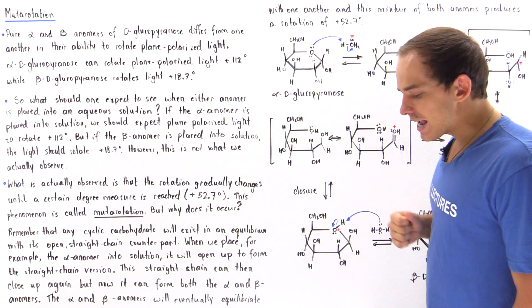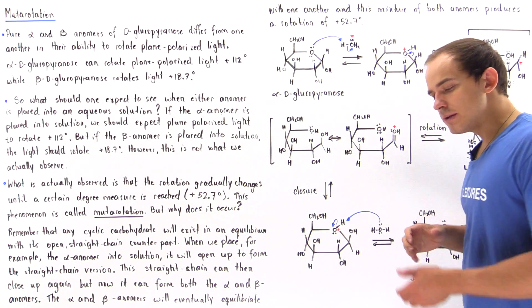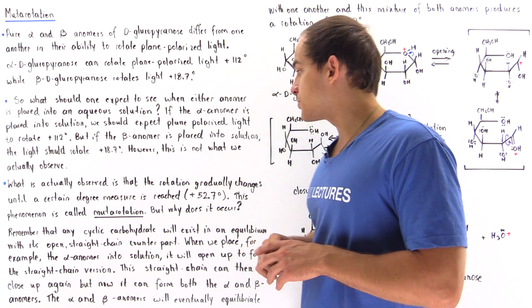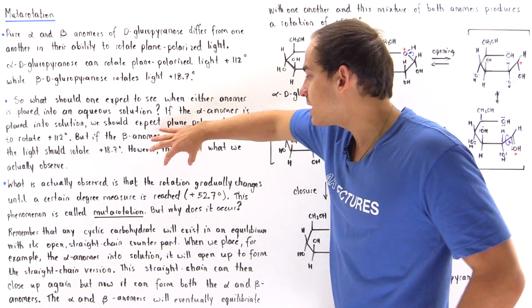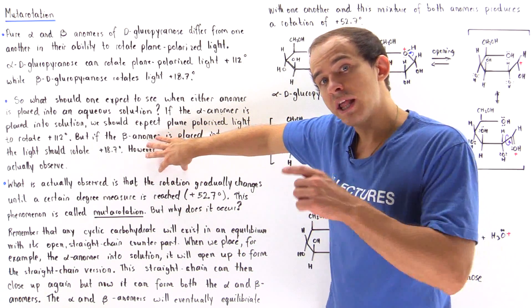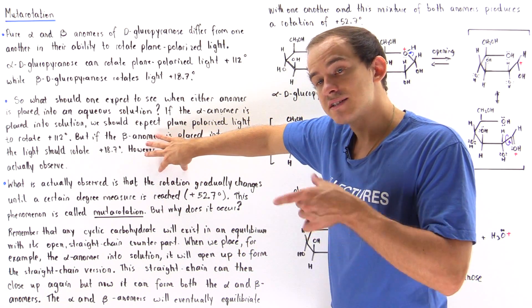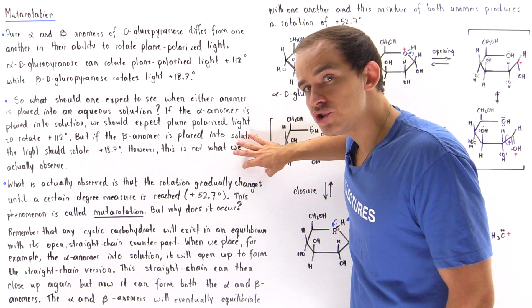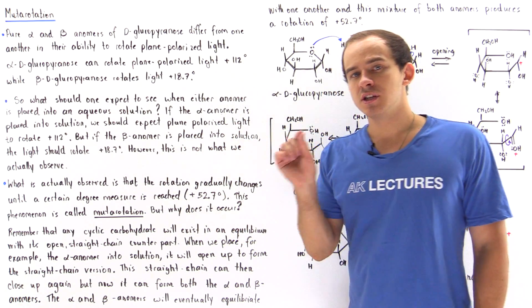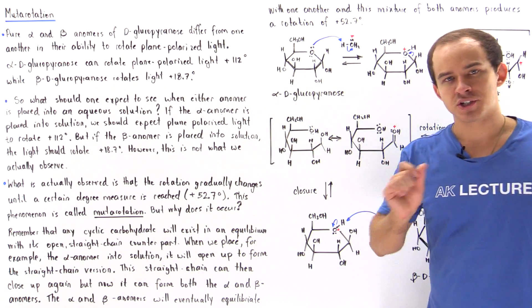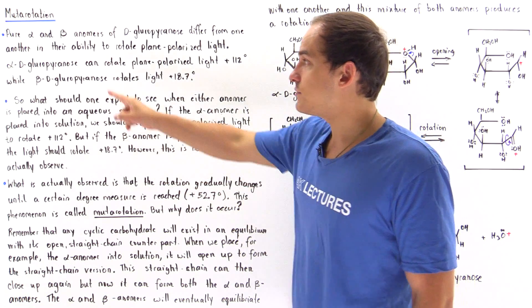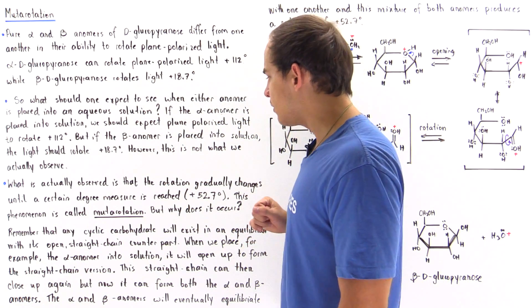This isn't actually what we observe experimentally. What we actually observe is that the rotation of the plane polarized light gradually changes until a certain degree measure is reached — for the case of D-glucopyranose,